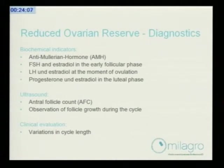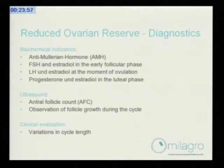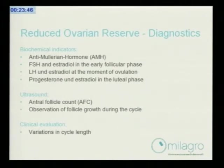How can we diagnose low ovarian reserve? We have biochemical indicators like anti-Müllerian hormone, AMH, the FSH and estradiol in the early follicular phase, LH and estradiol at the moment of ovulation, and progesterone and estradiol during the luteal phase.